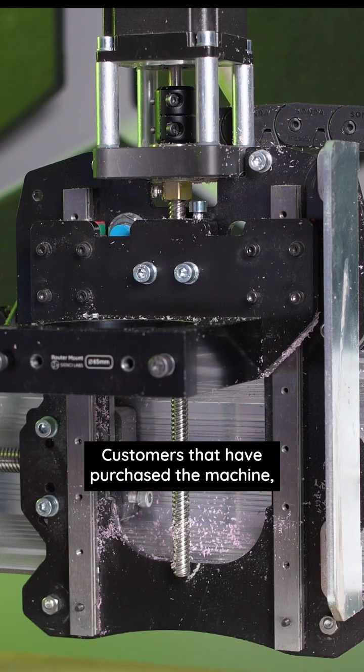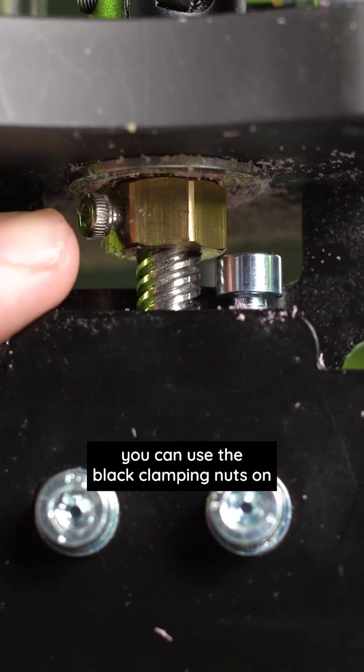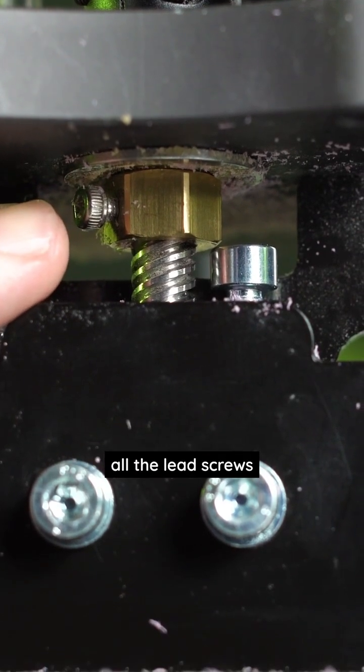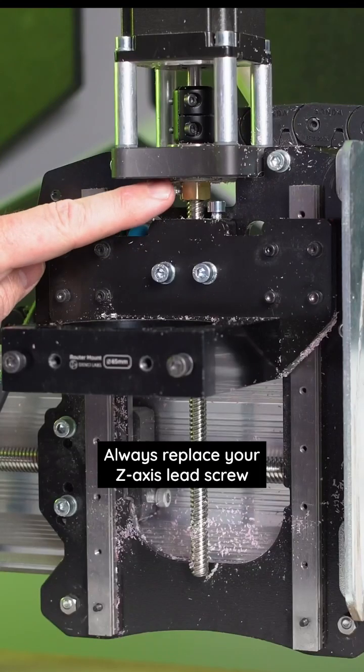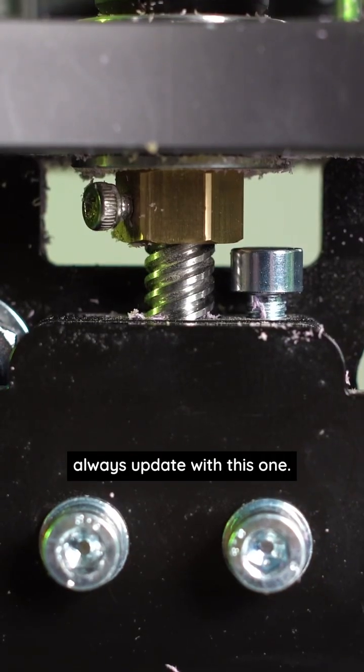Customers that have purchased a machine that have the brass Acme nuts, you can use the black clamping nuts on all the lead screws except for this one. Always replace your Z axis lead screw with the brass Acme nut.